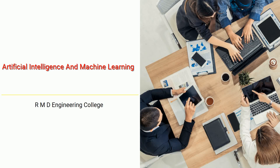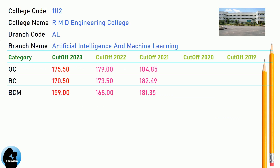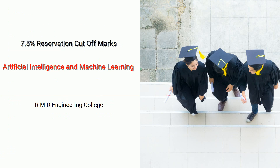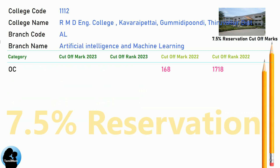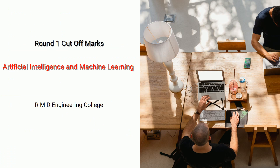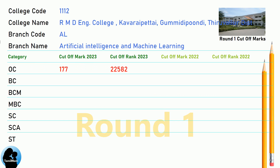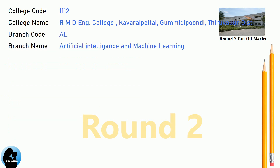DNEA Cut-Off for RMB Engineering College in Artificial Intelligence and Machine Learning. DNEA 7.5 Reservation Cut-Off for RMB Engineering College in Artificial Intelligence and Machine Learning. DNEA Round 1 Cut-Off for RMB Engineering College in Artificial Intelligence and Machine Learning. DNEA Round 2 Cut-Off for RMB Engineering College in Artificial Intelligence and Machine Learning.